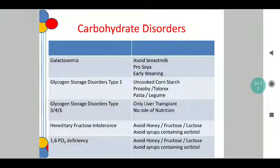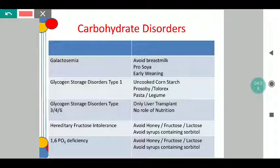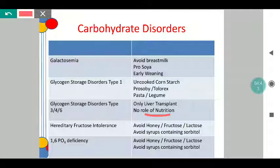Coming to glycogen storage disorders type 3, 4, and 6 — we will cover that first because it is quite simple. There is no role of nutrition, and the only treatment is liver transplant, because the defect occurs in the liver and there is a major defect.